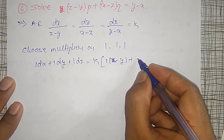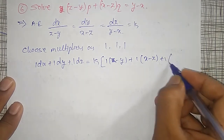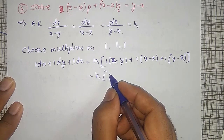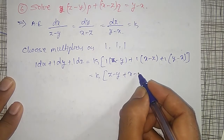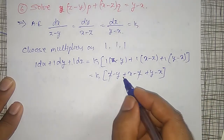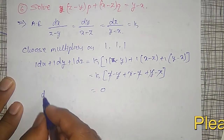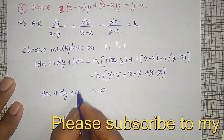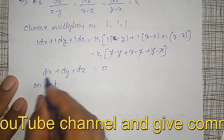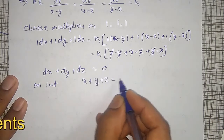That is K times (Z - Y + X - Z + Y - X), which equals K times zero. Therefore dx + dy + dz = 0. On integration, X + Y + Z = C1.